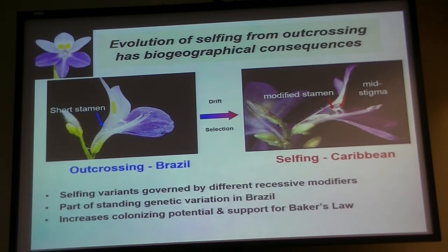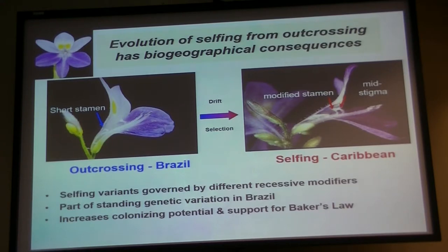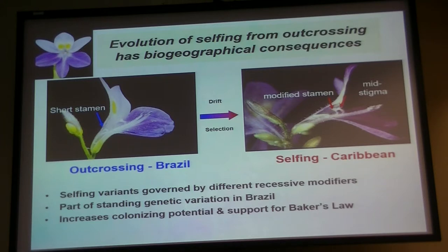We can cross self-variants from different parts of the range. The self-variants have a modified stigma — a single recessive allele that causes the filament to elongate 24 hours before anthesis, causing autonomous self-pollination of the flower. We find different recessives in different parts of the range. If we cross two selfing phenotypes, we go back to wild type as a test of complementarity. Once we have a selfing phenotype, through Baker's Law, there are opportunities for selfing to allow establishment of single individuals following long-distance dispersal — the idea that a selfing individual has an advantage in establishing on islands because the individual can mate with itself.